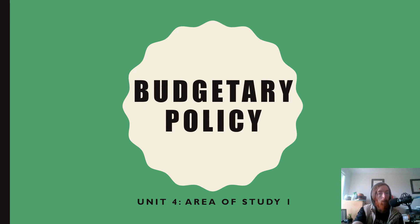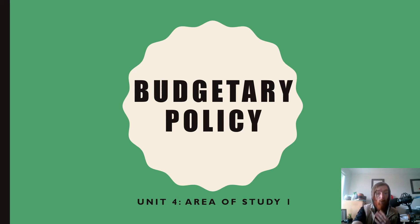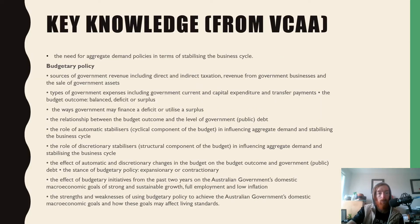Hello everyone and welcome to the second PowerPoint for budgetary policy, Unit 4, Area Study 1 in economics, where we're going to be looking at government outlays — basically how the government spends the money they receive through direct tax, indirect tax, and non-tax revenue. We'll look at all the different ways the government can spend their money across four slides of information.